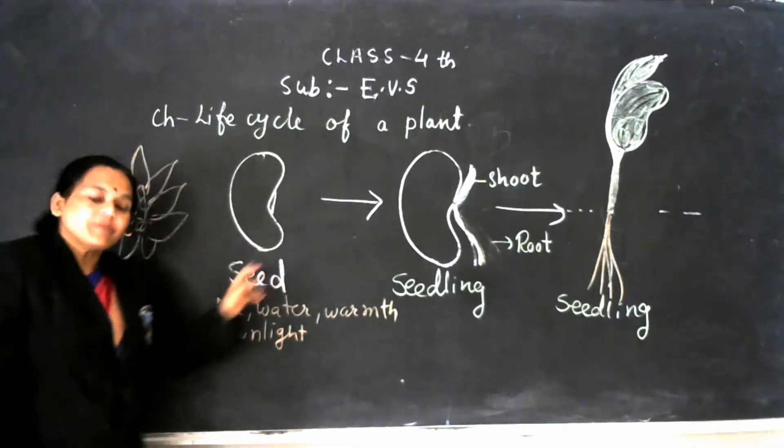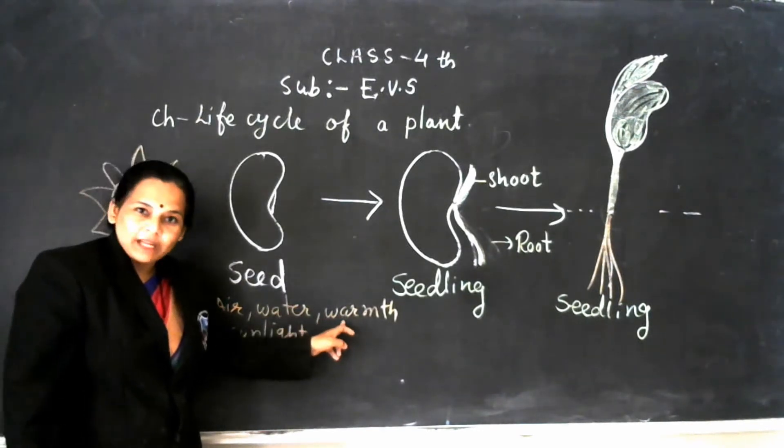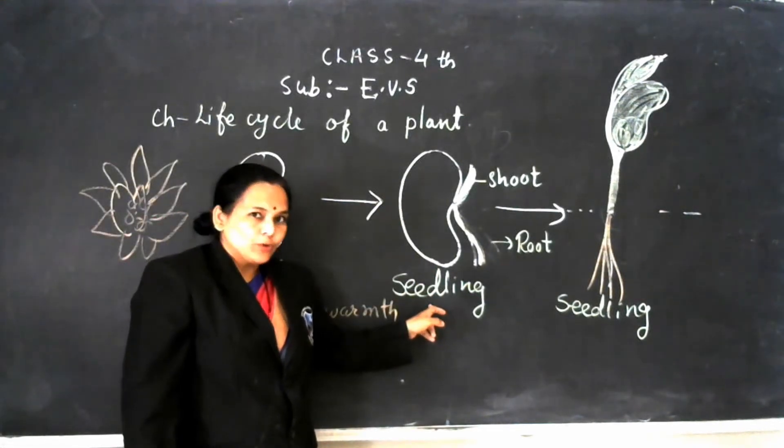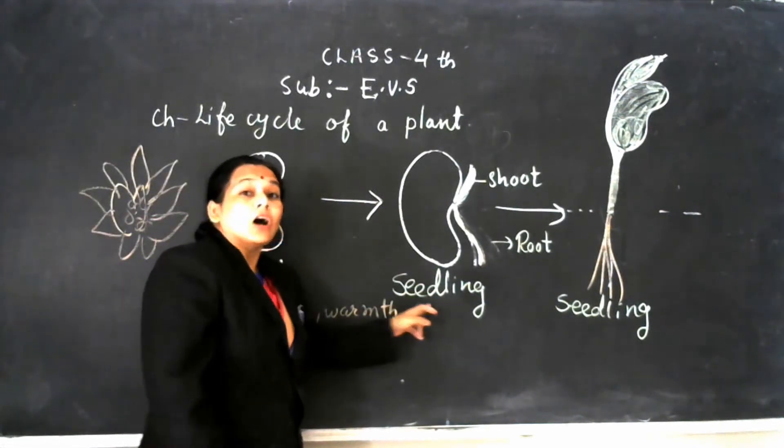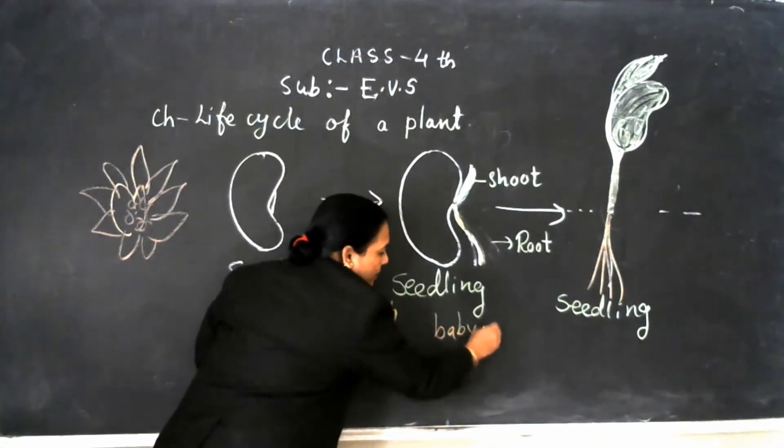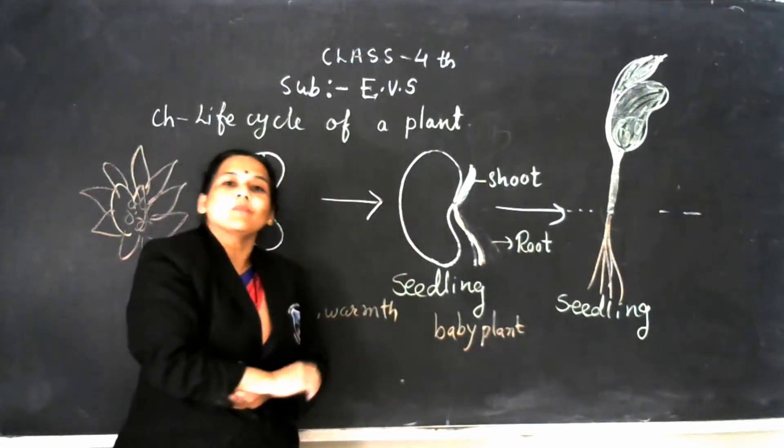In the second stage, the seed, if they get air, water, warmth from the soil and sunlight, germinate into seedling. And do you know, seedling is also called a baby plant, the baby plant of that seed.